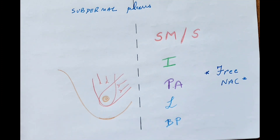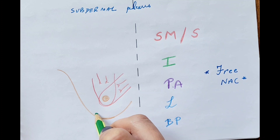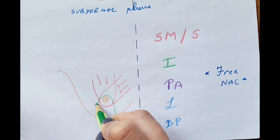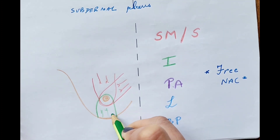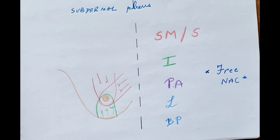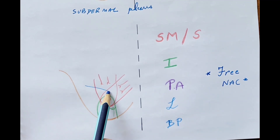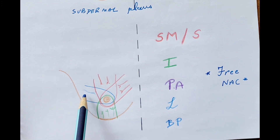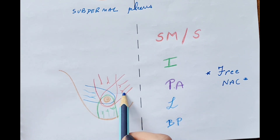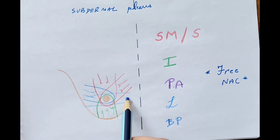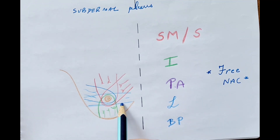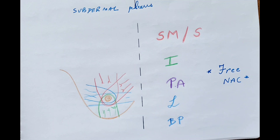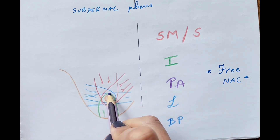The inferior pedicle technique is one of the most popular techniques even today. Here the nipple areola complex survives on blood vessels coming mainly from the inferior pole of the breast. Similarly, a lateral pedicle technique uses perforators from the lateral side. A bipedicle technique means the NAC survives on blood supply from both the medial and lateral sides — this was one of the oldest described techniques and is not popularly used now.